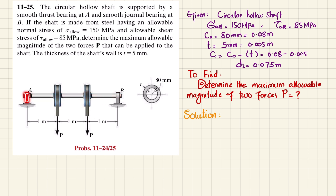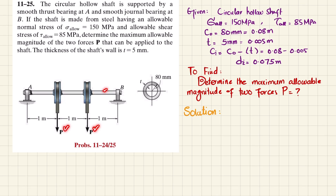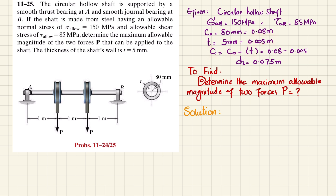The shaft has support of a smooth thrust bearing at A and a smooth journal bearing at B, with two point loads of P applied at different locations. The cross section of this hollow shaft is given: the outer radius is 80 mm and the wall thickness is 5 mm. So the inner radius equals c_outer minus t, which gives c_inner equal to 0.075 m.